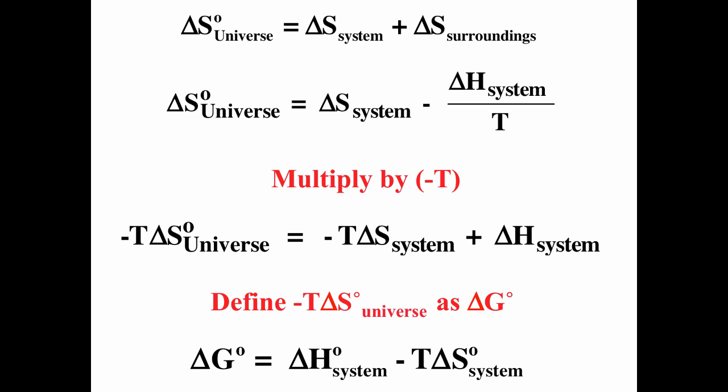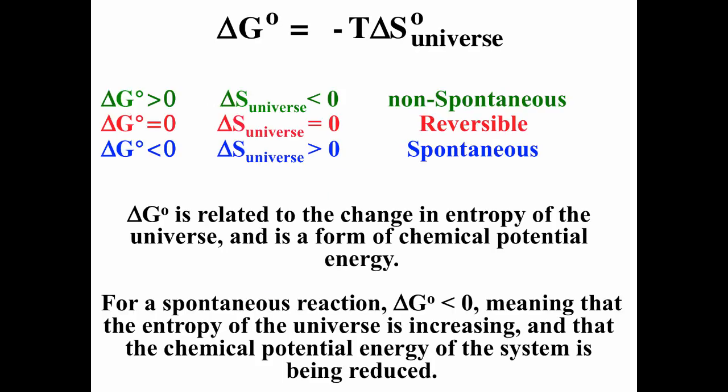So we have ΔS_universe = ΔS_system − ΔH/T. If we multiply through by −T, we get −T·ΔS_universe = −T·ΔS_system + ΔH. We define ΔG, the change in Gibbs free energy, as −T·ΔS_universe. So ΔG = ΔH − T·ΔS of the system. We've gone from the second law — spontaneous processes increase entropy of the universe — and related it to ΔG, a form of chemical potential energy.